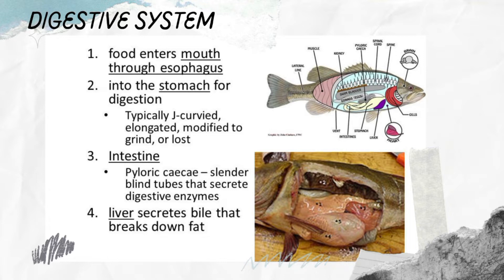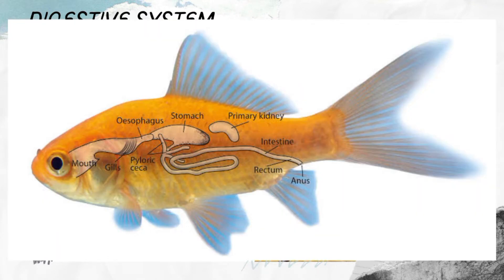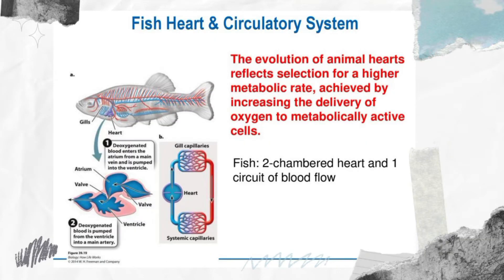At the end of the stomach, many bony fishes have blind sacs called the pyloric caeca. The pyloric caeca are an adaptation for increasing the gut area where food is digested. The pancreas secretes enzymes into the intestine for digestion, and most food absorption takes place in the intestine. Plant-eating bony fishes generally have long coiled intestines, while carnivorous bony fishes have shorter intestines. The digestive system terminates at the anus.